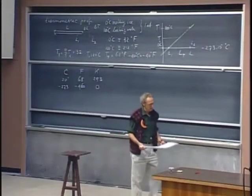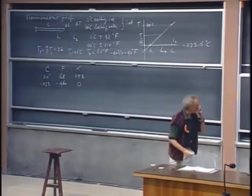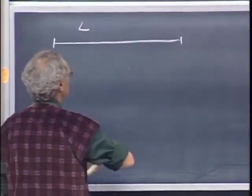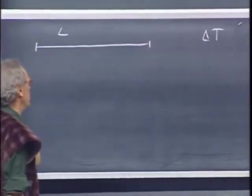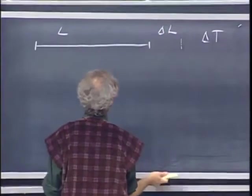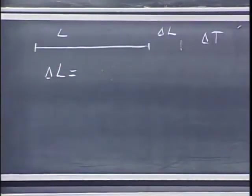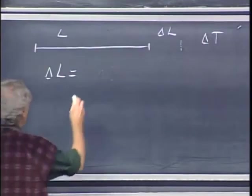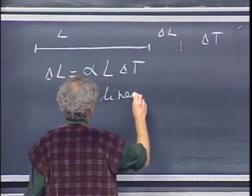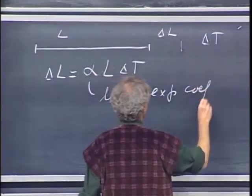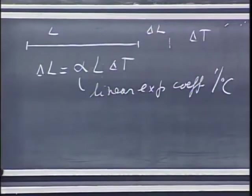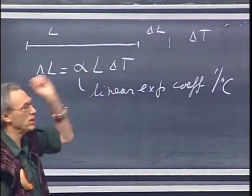Most substances expand when you heat them. And if we start with an object which has length L, and I heat it up delta T degrees, it gets longer by an amount delta L. And that delta L can be expressed in a very simple way. It is alpha times L times delta T, and alpha is called the linear expansion coefficient. And the units are one over degree centigrade, or one over degree Kelvin, which is the same, because it's the increments that matter.